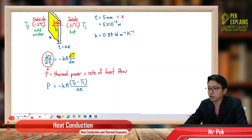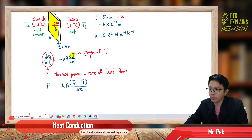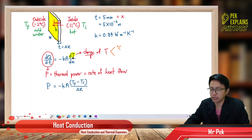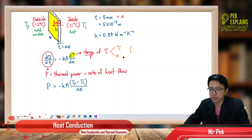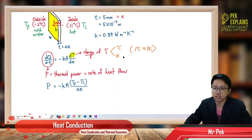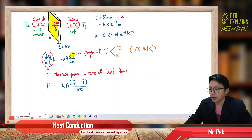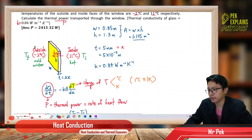We are dealing with change of temperature. When talking about change of temperature, both units are accepted — you can leave it at degrees Celsius or put it in Kelvin, because the increase of one degree Celsius is equivalent to an increase of one Kelvin. The change in temperature is the same in either unit. So we can maintain degrees Celsius — no need to change to Kelvin.